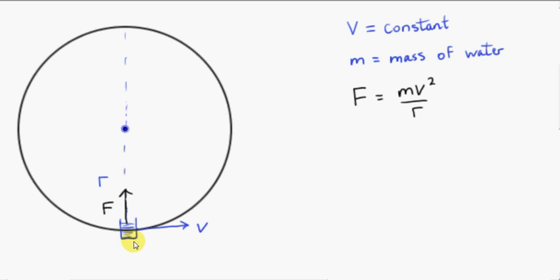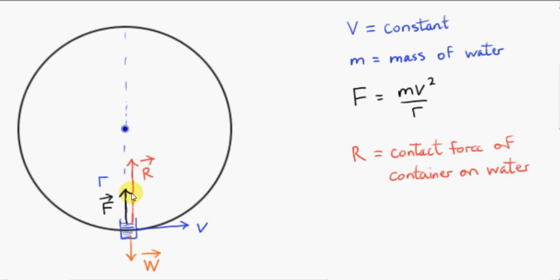Obviously we have the weight of the water. Now that can't be the only force acting on the water, because the resultant is a vector pointing vertically up. So there must be another force acting on the water, which I will call R. R is the contact force of the container on the water. The direction of vector R must be vertically up, because that's the only way that we can get a resultant force F which is vertically up.